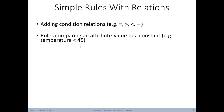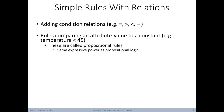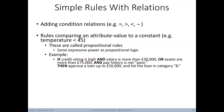Rules can compare attribute values to a constant — for example, temperature less than 45 degrees — called propositional rules, with the same expressive power as propositional logic. For example: if credit rating is high, and salary is no more than £30,000 or assets are more than £75,000, and pay history is not poor, then approve the loan of £10,000 and list the loan in category B. This demonstrates rules with variables compared using conditional relations.